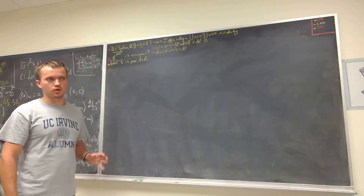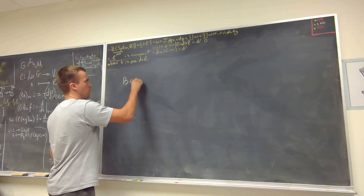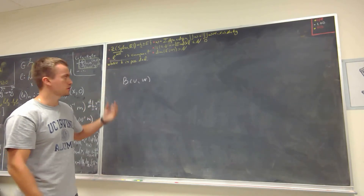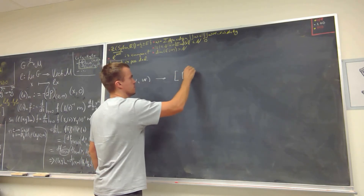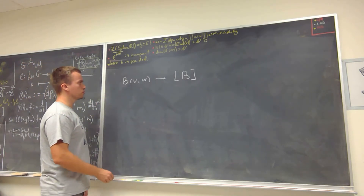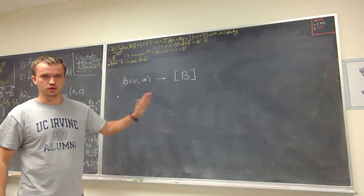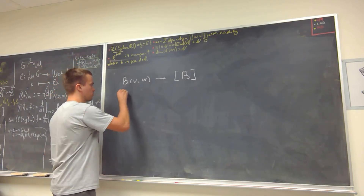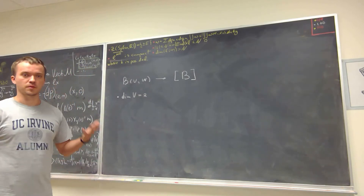In this video, I want to show how to obtain, from a bilinear form, how to express this form in matrix notation — in other words, how to obtain a matrix B that corresponds to a given bilinear form. For simplification, I'm going to take the dimension of my vector space to be equal to 2, but you can do the same for any dimension.